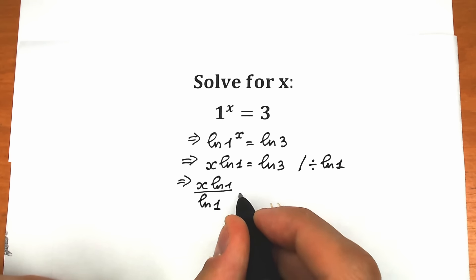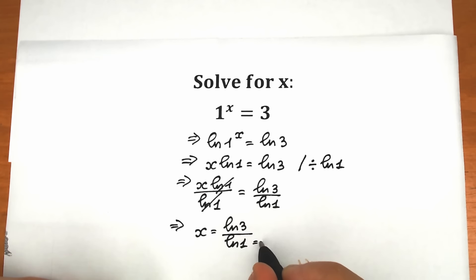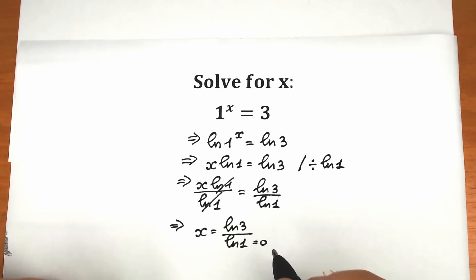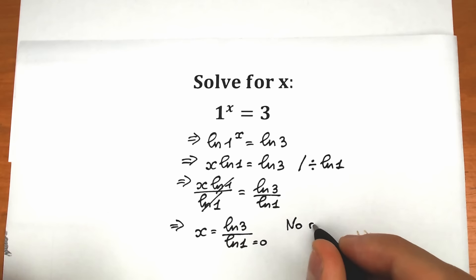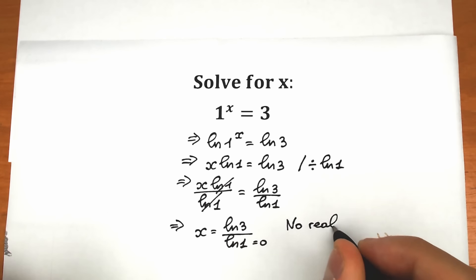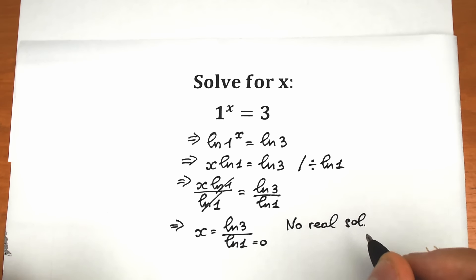And natural log 1 equals 0. This is a very tricky moment. In math we know that we cannot divide by 0, so natural log 3 divided by natural log 1 — we cannot simplify this expression. As a result, we can see that there are no real solutions here.